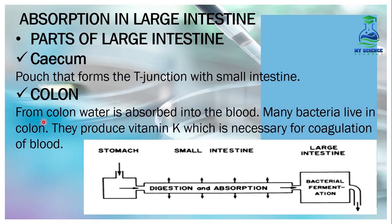From the colon, water is absorbed into the blood. Many bacteria live in the colon and they produce vitamin K, which is necessary for coagulation of the blood. The main role of the large intestine is the absorption of water. The bacteria present also produce vitamin K, which is important for blood clotting.